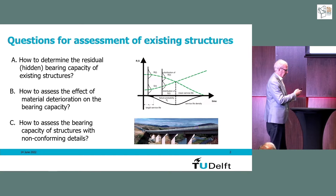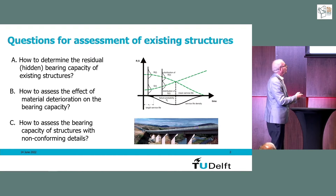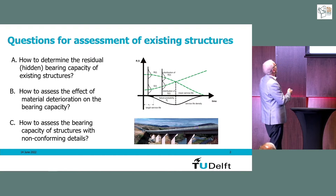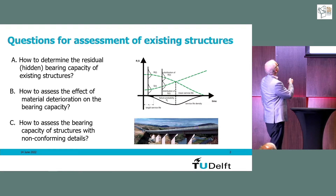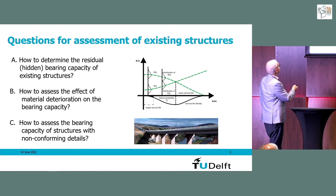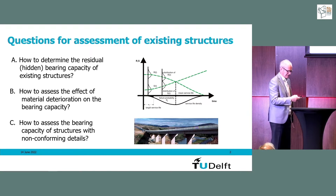We have three main categories for determining the residual hidden bearing capacity of an existing structure: how to assess a sound structure, how to assess the effect of material deterioration on the bearing capacity, and how to assess the bearing capacity of structures with non-conforming details.